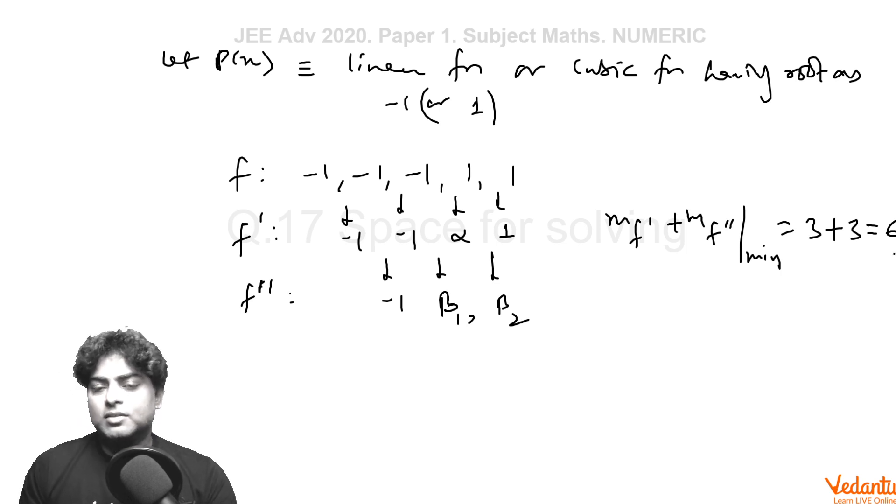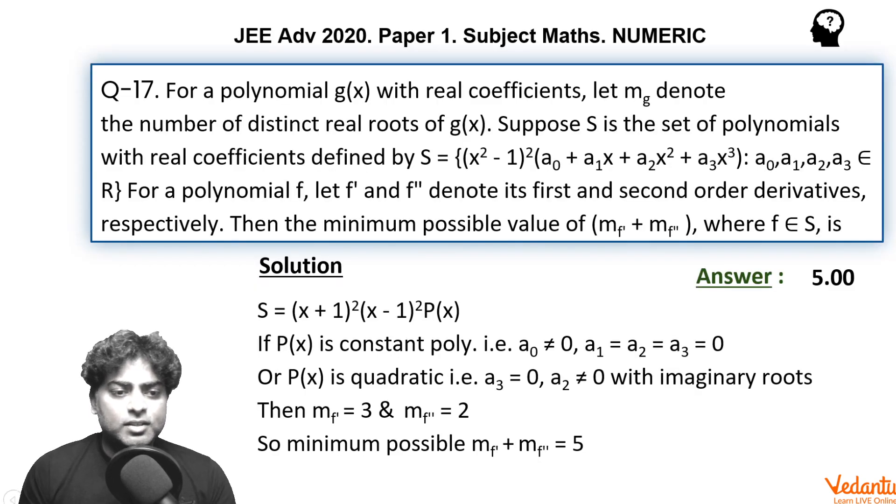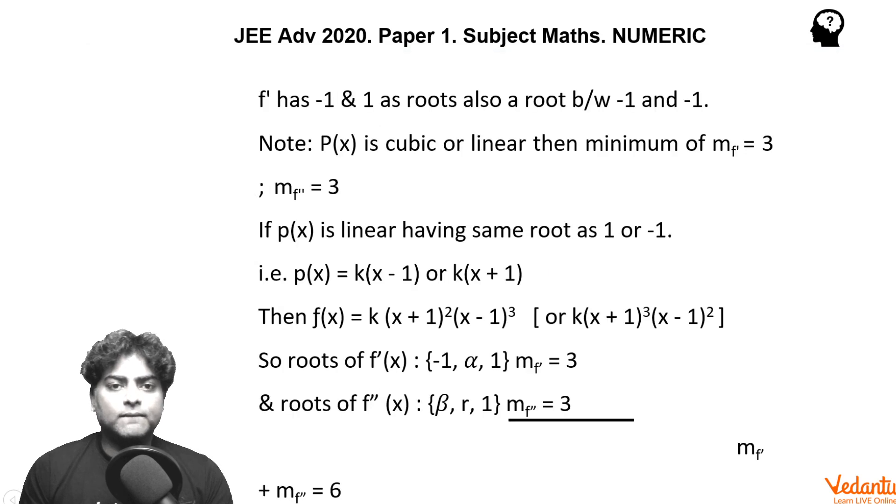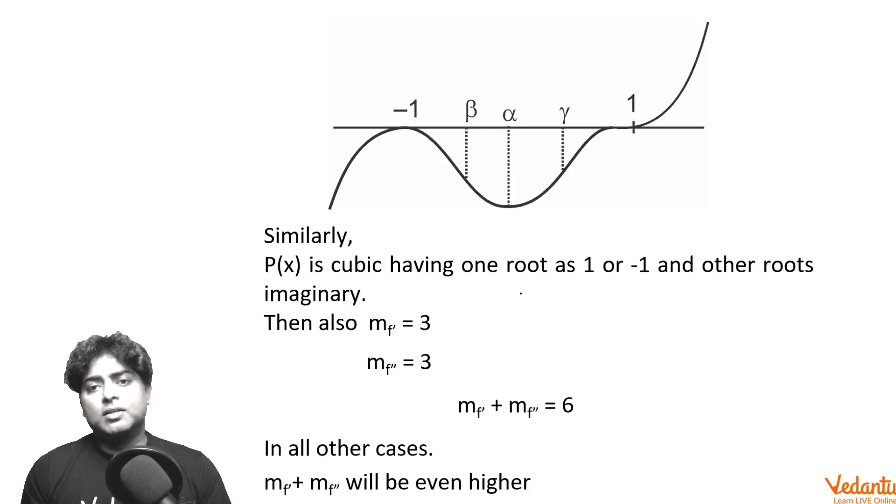So 5 is the minimum possible value of m_f' plus m_f'', and is the final answer. I hope you understood the solution. Everything is written in typed form also, you can see and note. You can refer this note: P(x) is cubic or linear. This is the complete solution.